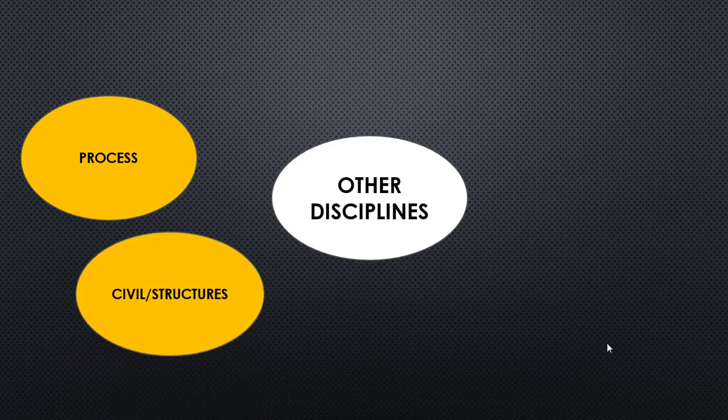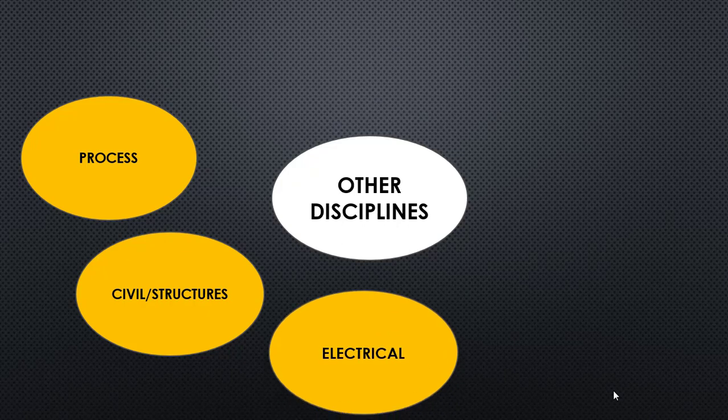The next discipline is civil and structures, which designs structures and civil foundations based on piping inputs. Once the design is done, the piping team and the civil-structural team sit together to ensure the design is acceptable. The next discipline is electrical, which prepares the fundamental scheme for supplying electricity to various equipment and instruments. There will be lots of electrical cables running across the plant, both above ground and underground, so it is important to work with the electrical team to ensure piping doesn't clash with those cables.